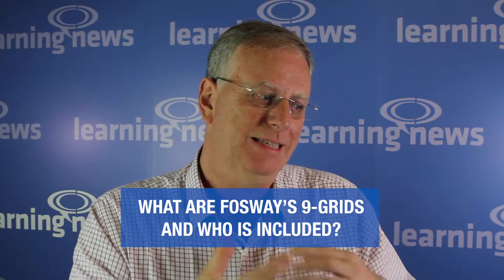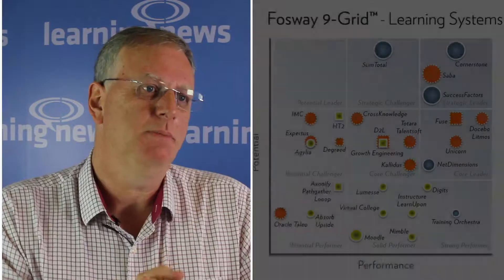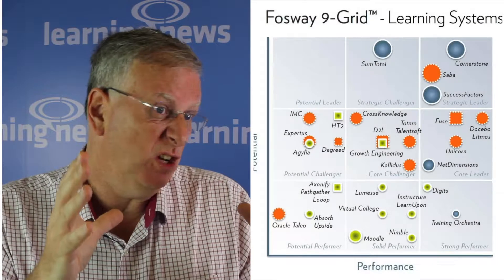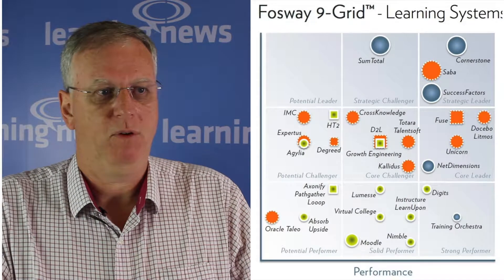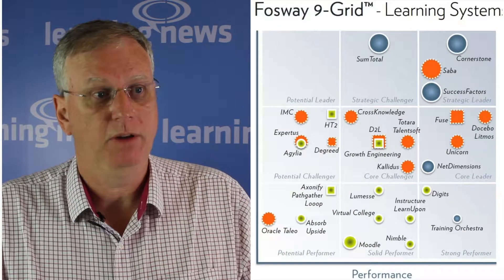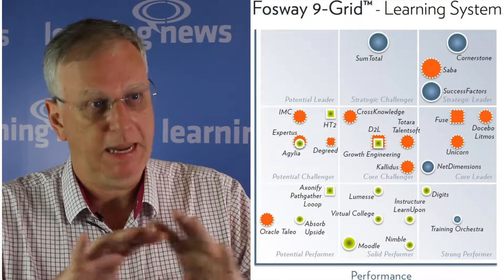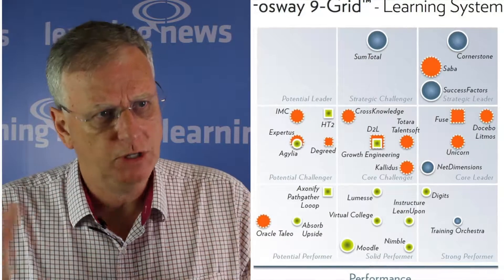We're trying to identify a set of dynamics that hopefully help corporates make better decisions around the right partners. The other factor is understanding the detail behind that. The nine-grid is very much a top-level assessment — it's a single visual but has loads of data behind it. We have a public research process and then a deeper process, what we call our corporate research network.